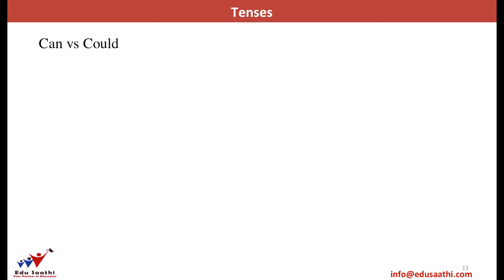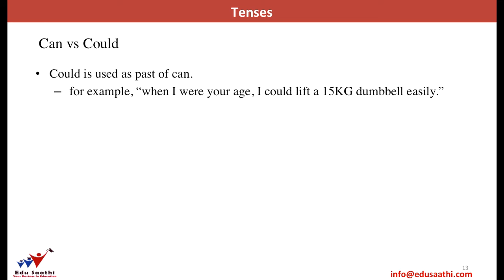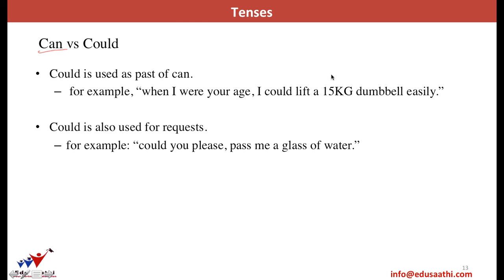Let us differentiate between 'can' and 'could.' Like 'should' and 'would,' 'could' is the past of 'can.' For example, 'When I were 20, I could lift a dumbbell easily' — this means there was the ability in the past. 'Can' is used to show your current ability, whereas 'could' is used to show your ability in the past — something you were able to do. The other place where we use 'could' is to request someone. For example, 'Could you please pass me a glass of water' is a request. But if I say 'Can you please pass me a glass of water,' it will be treated as an order rather than a request.